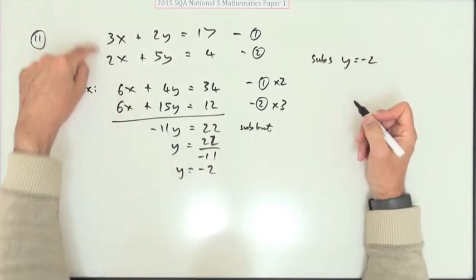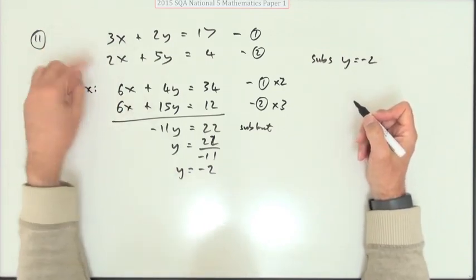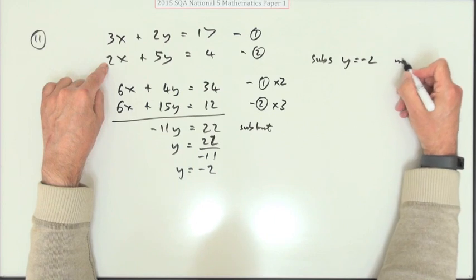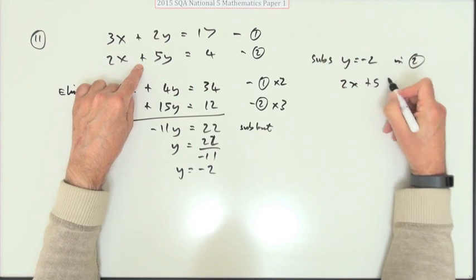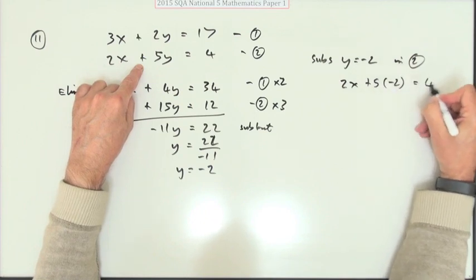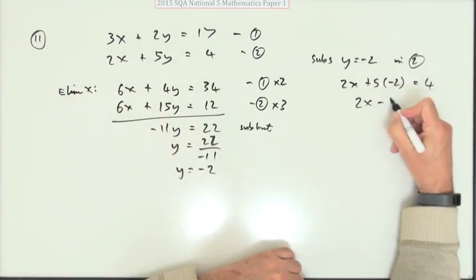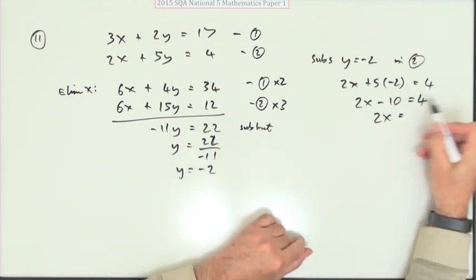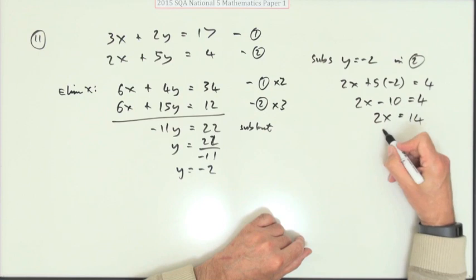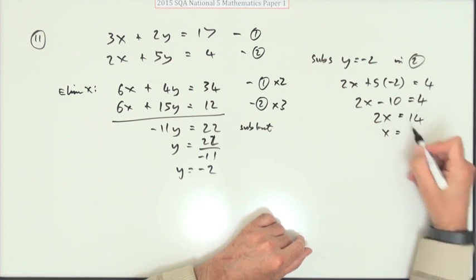Now you just pop that back in. Substitute y is negative 2 into whichever one takes your fancy for working out x. Maybe this one, maybe number two. So how would number two read? It would read 2 times x plus 5 times negative 2 is 4. 2 times x minus 10 is 4. Take the 10 across and add it, 14. Divide by the 2, 14 divided by 2, 7.